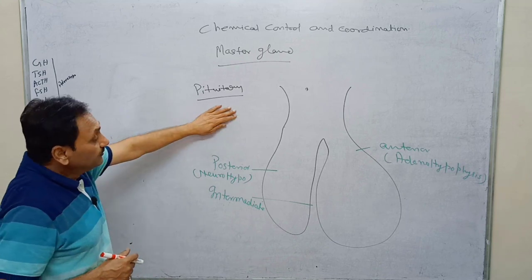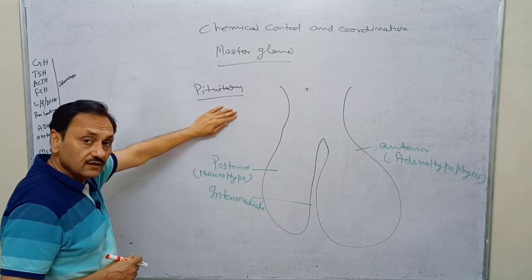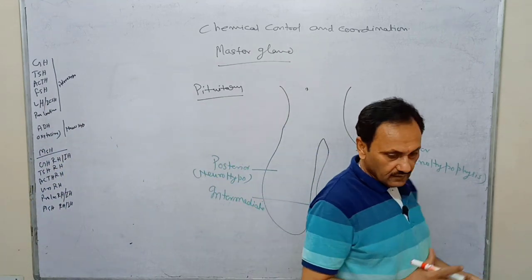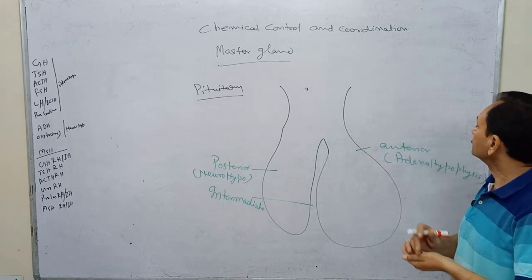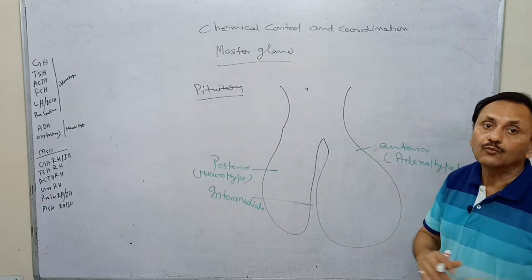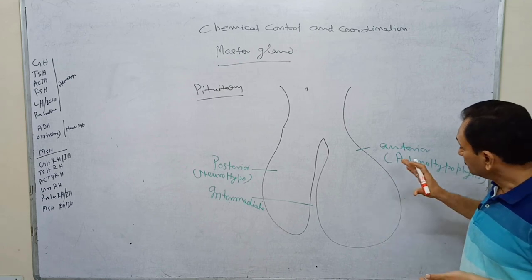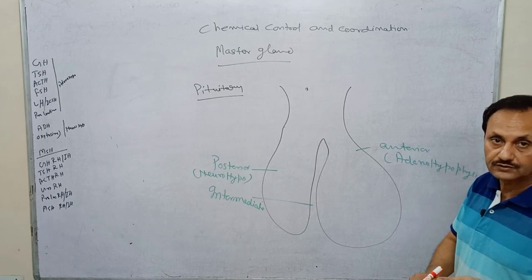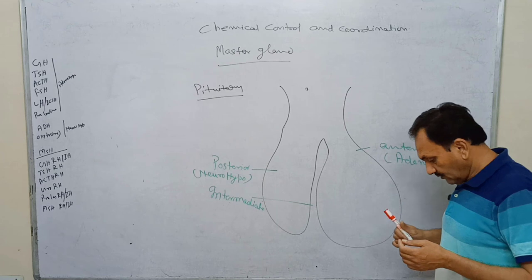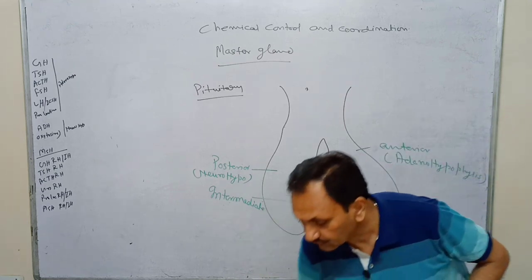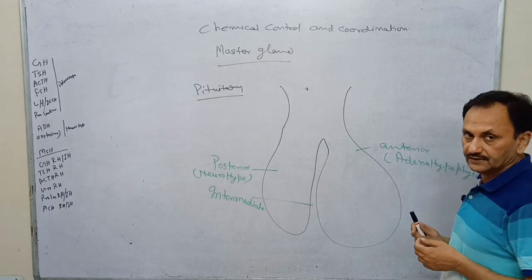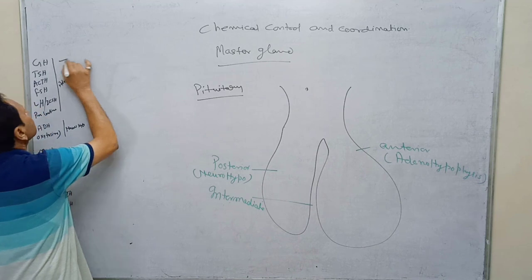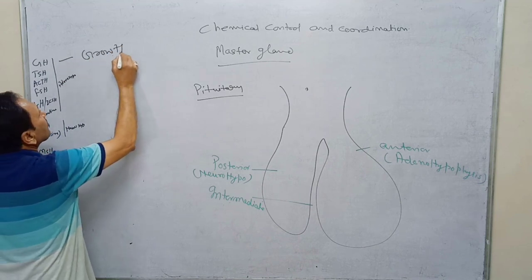Why is it called the master gland? Because it is responsible for controlling the activity of certain glands through its own hormones, and most of these hormones are called trophic hormones. We will make a list of hormones released from the anterior lobe of the pituitary. Number one is the growth hormone.